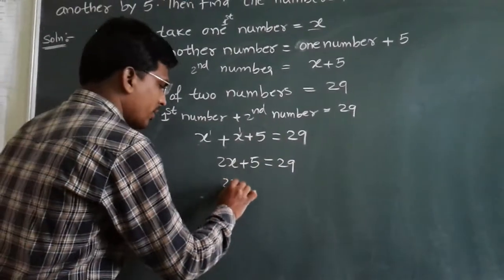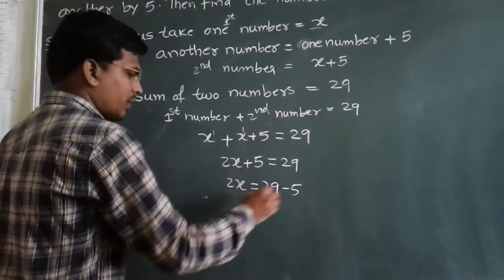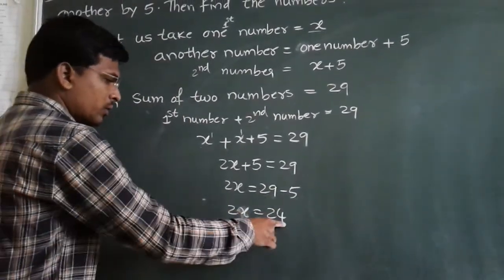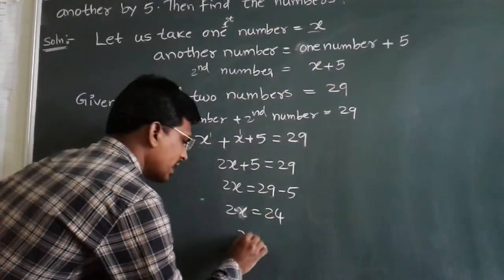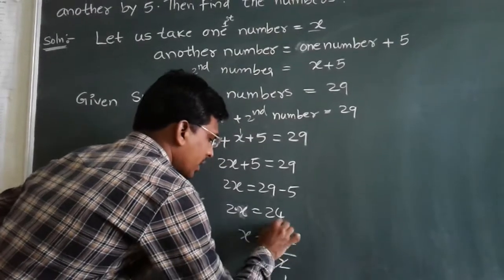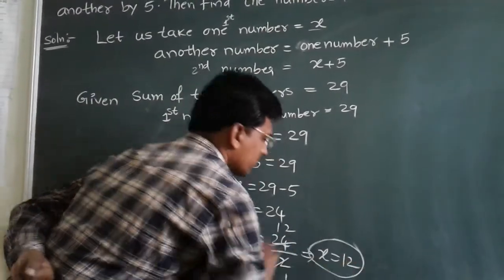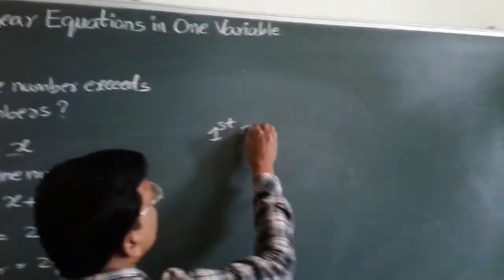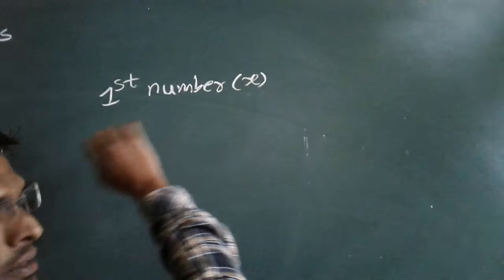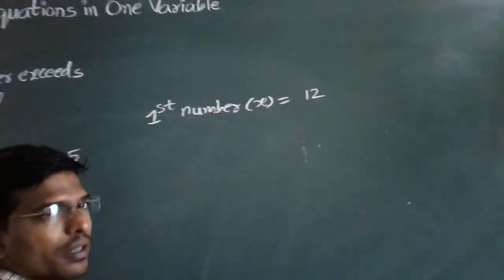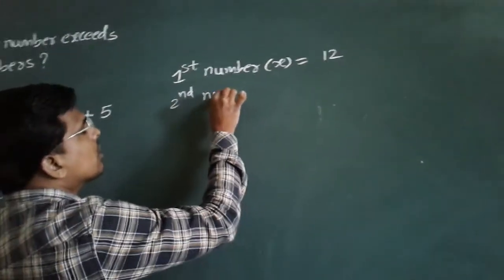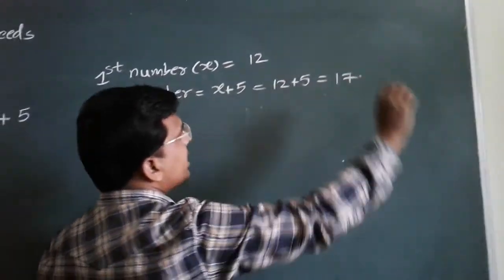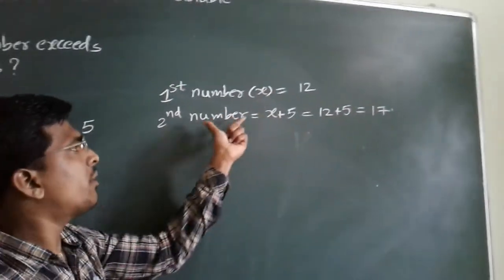Sending the 2 to the right hand side as a divisor: x equals 24 divided by 2, so x equals 12. The first number is x, which equals 12. The second number is x plus 5, which is 12 plus 5, equals 17. So the first number is 12 and the second number is 17.